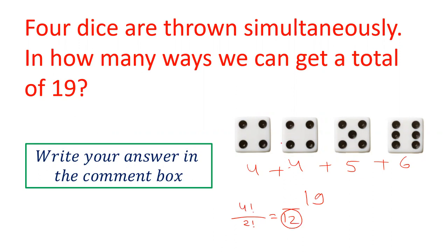This is because the two 4s can be placed anywhere among the four different dice D1, D2, D3, and D4. So there are 12 such cases just for the combination 4, 4, 5, 6. The question asks: how many total such cases are possible across all combinations?